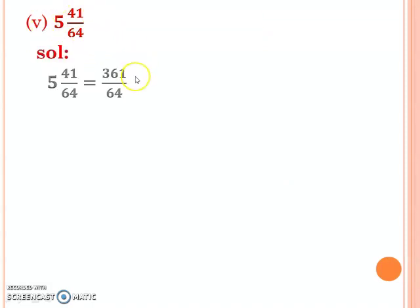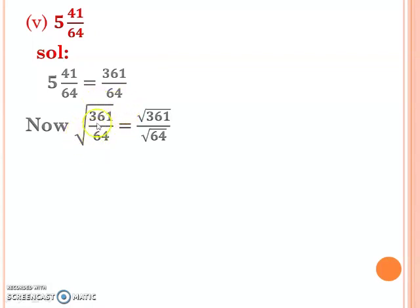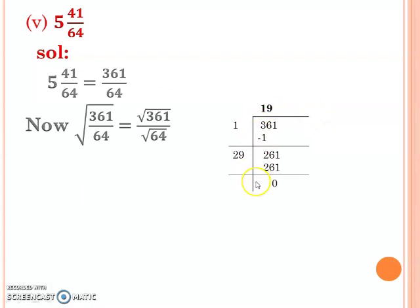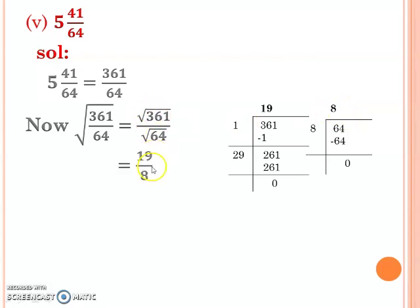Let's solve one more part, which is the fifth part. First convert the mixed fraction to a simple fraction: multiply 64 by 5 and add 41, giving 361 over 64. Then apply the square root. Using the property, apply square root separately to numerator and denominator. Find the square root of 361 by division method, which gives 19. For 64, using division method, the answer is 8.